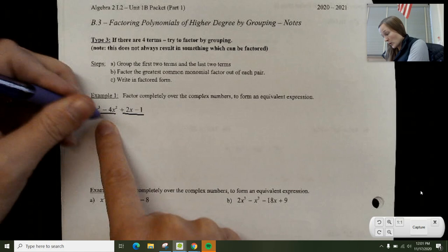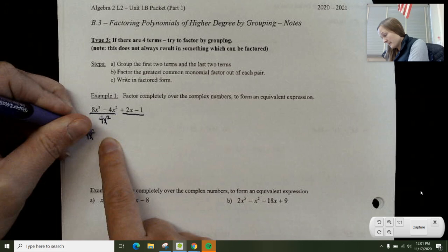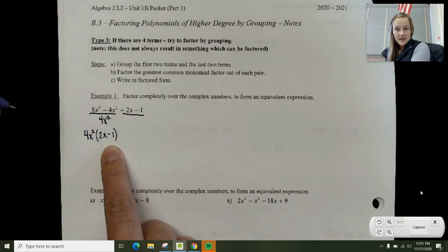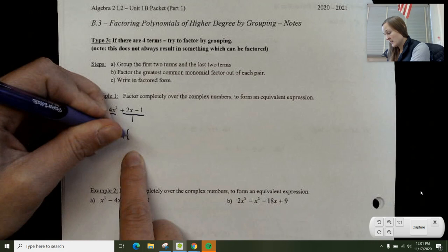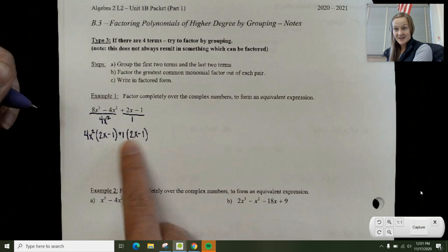Here I've got a GCF of 4x², and when you take out 4x², you're left with 2x - 1. In the back two, I've got 2x - 1. I can only take out a 1, so I've got +1 times (2x - 1).